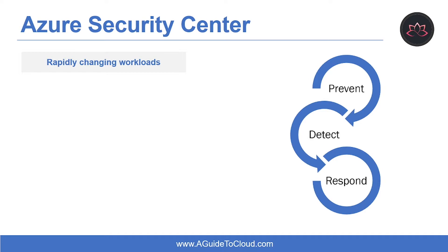Rapidly changing workloads are both a strength and a challenge of the cloud. End users are empowered to do more, but how do you make sure that the ever-changing services people are using and creating are up to your security standards and follow security best practices? The second challenge is increasingly sophisticated attacks — wherever you run your workloads, attackers keep getting more sophisticated, and public cloud workloads are internet-facing, leaving you more vulnerable if you don't follow security best practices.